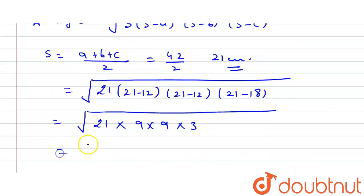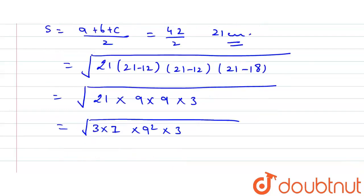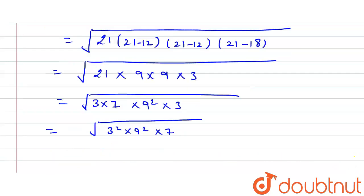You can write it as 21, which is 3 multiply 7, multiply 9 square, multiply 3. So it is equal to square root of 3 square multiply 9 square multiply 7. So it becomes 3 multiply 9 square root of 7 centimeter square is our area.